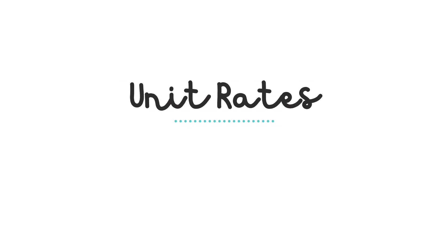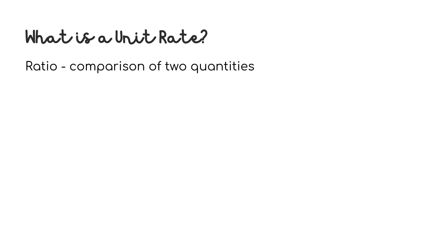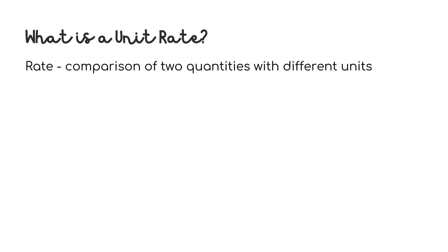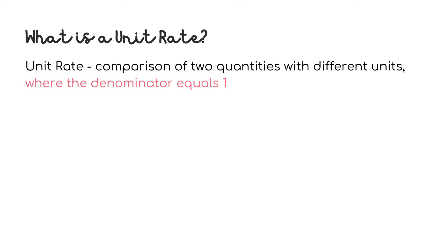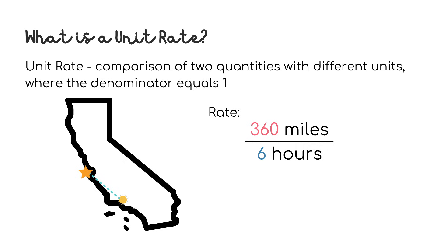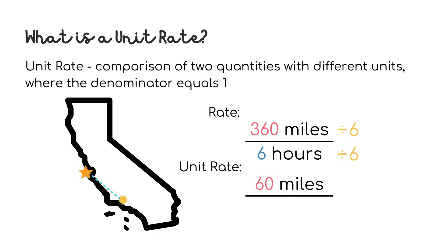I mentioned earlier we're also going to talk about unit rates. As a reminder, a ratio is a comparison of two quantities. A rate is a specific type of ratio — also a comparison of two quantities but with different units. And now, a unit rate is a specific type of rate. It's also a comparison of two quantities with different units, but for a unit rate, its denominator equals 1. If we go back to our previous example of the road trip from LA to San Francisco, our rate was 360 miles per 6 hours. In order to get the unit rate, we need to make the denominator equal 1. We can do this by dividing both numbers by 6. 360 divided by 6 equals 60, and 6 divided by 6 equals 1, which is exactly what we wanted. So now that our denominator equals 1, we've found our unit rate. You often hear this said as 60 miles per hour.